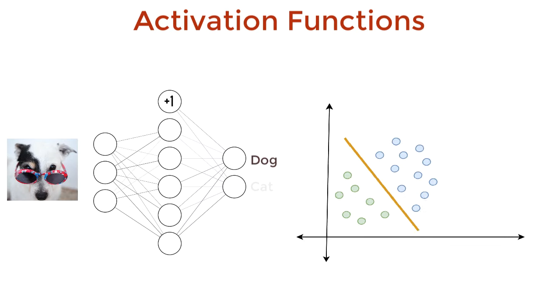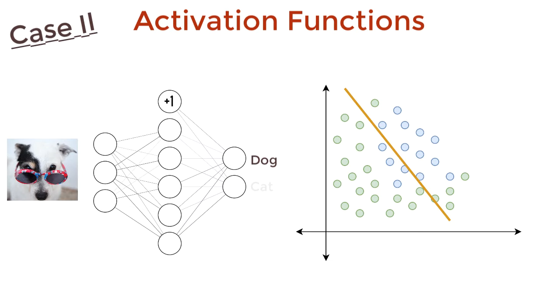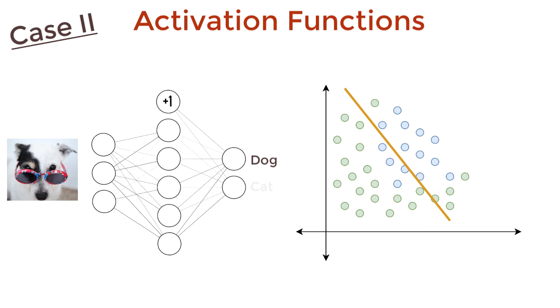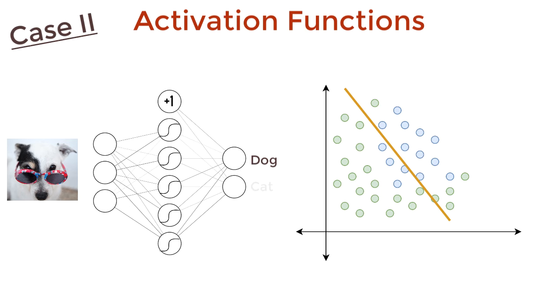Now case two. We have data that can't be separated by a line. And what we did before was we added a sigmoid activation. The output is now more complicated, and we get better fitting decision boundaries.